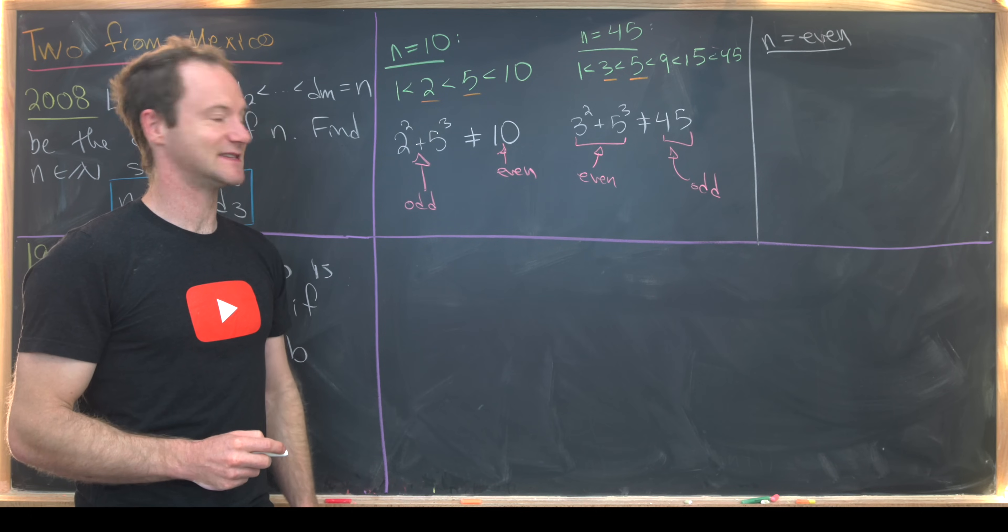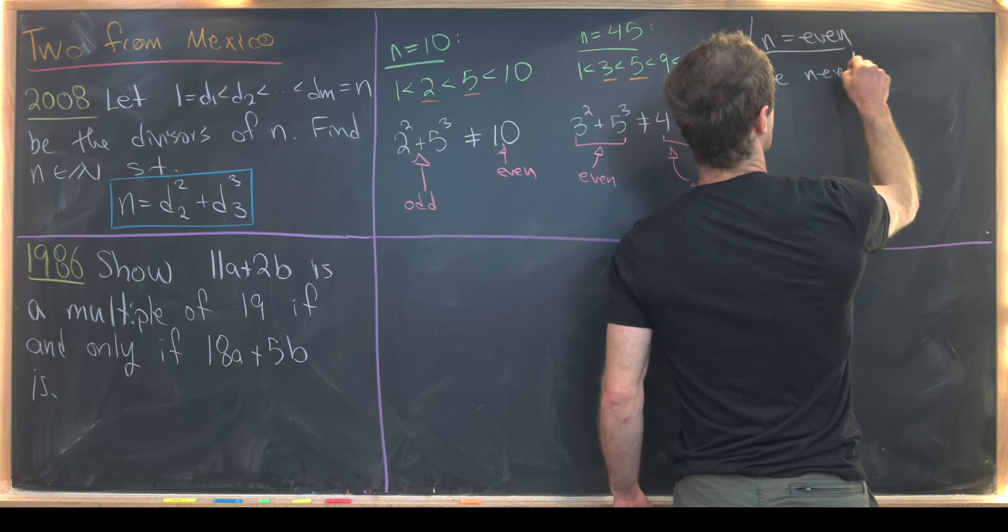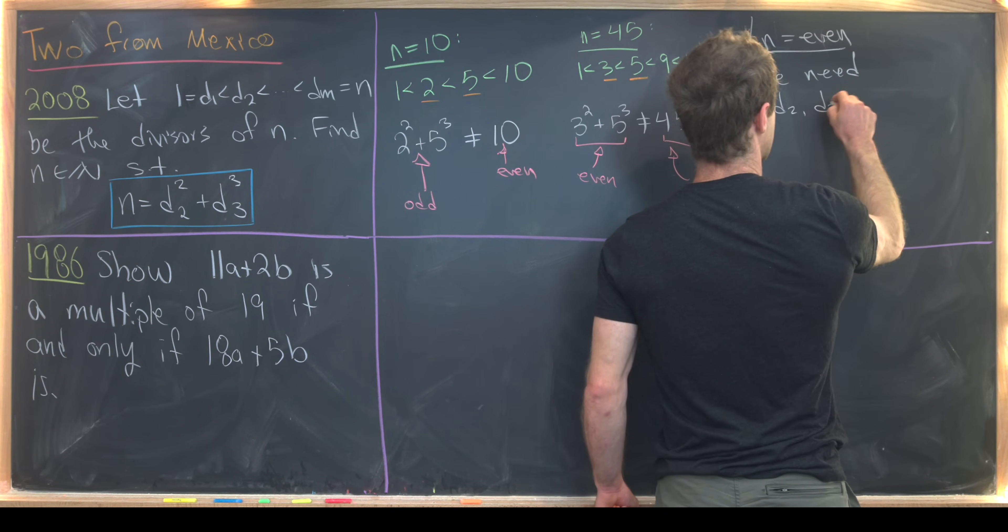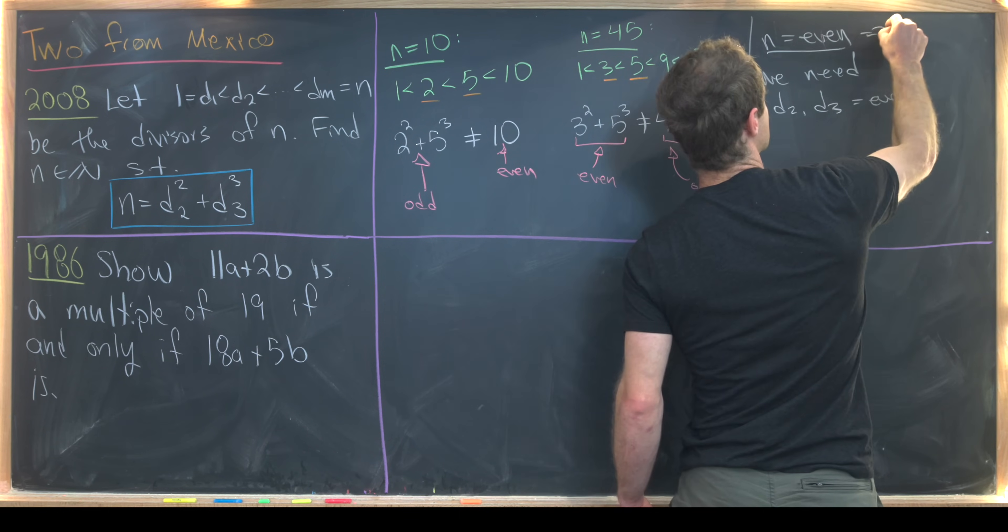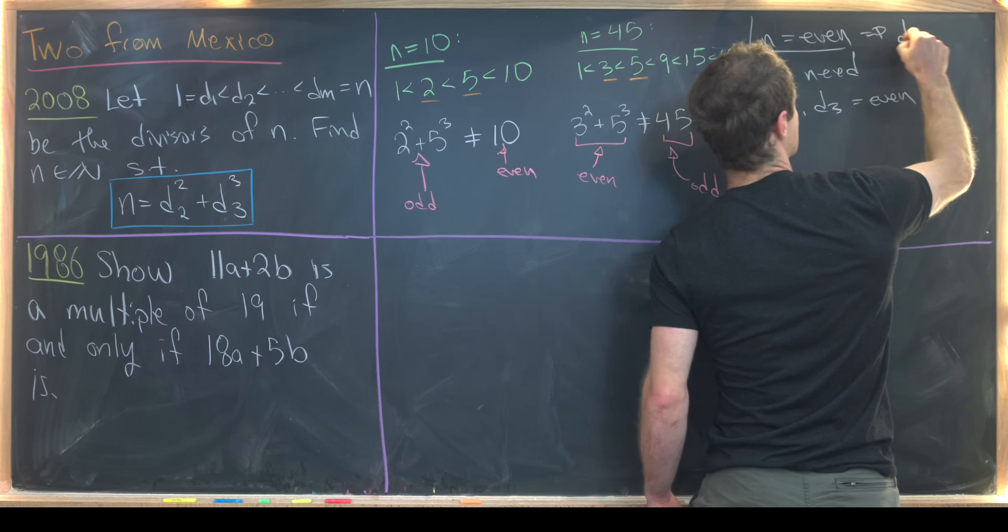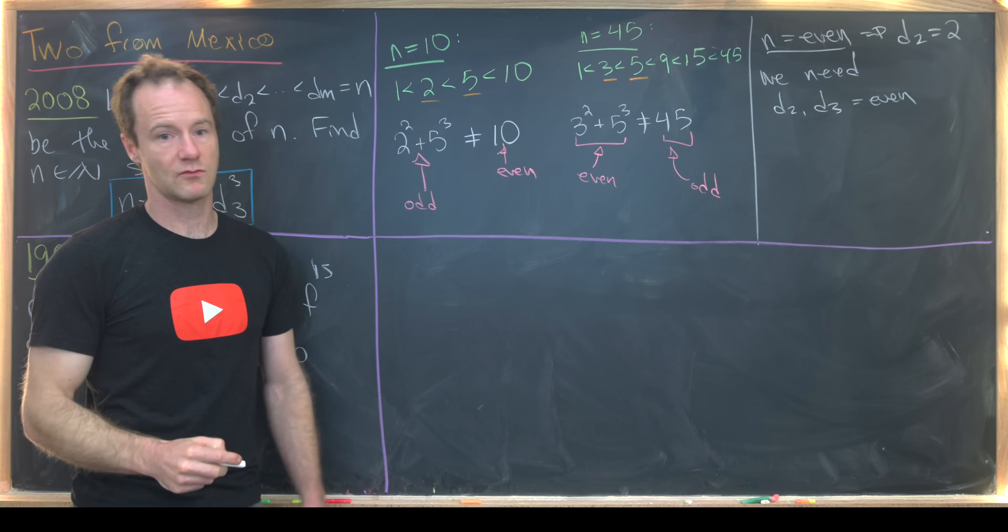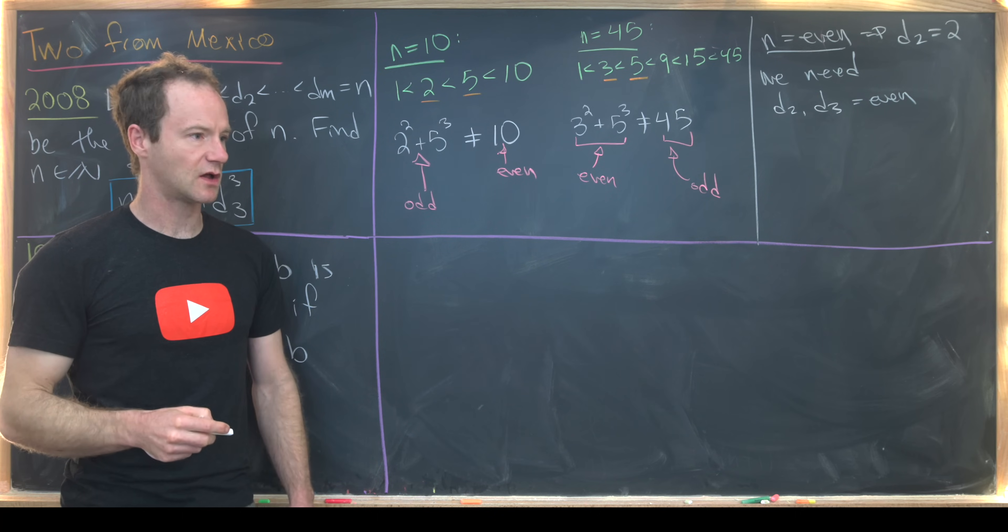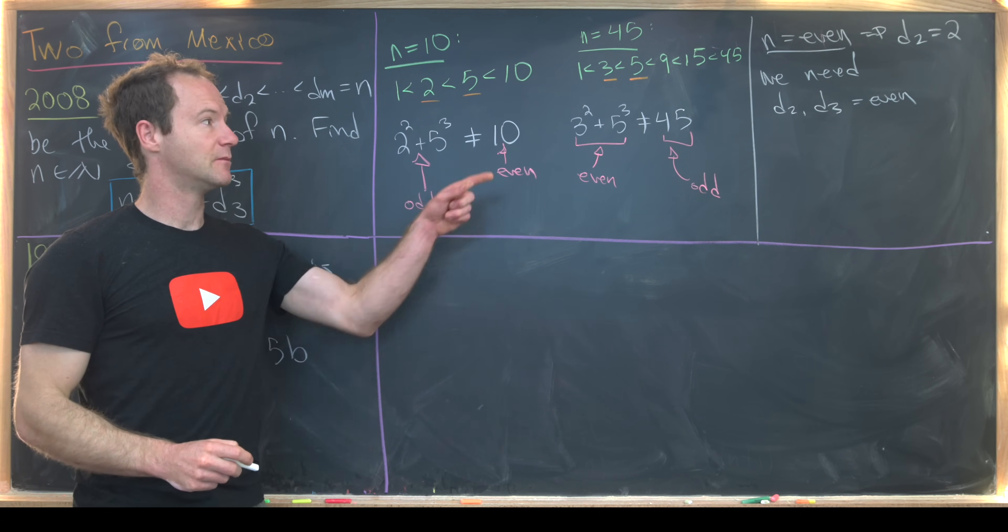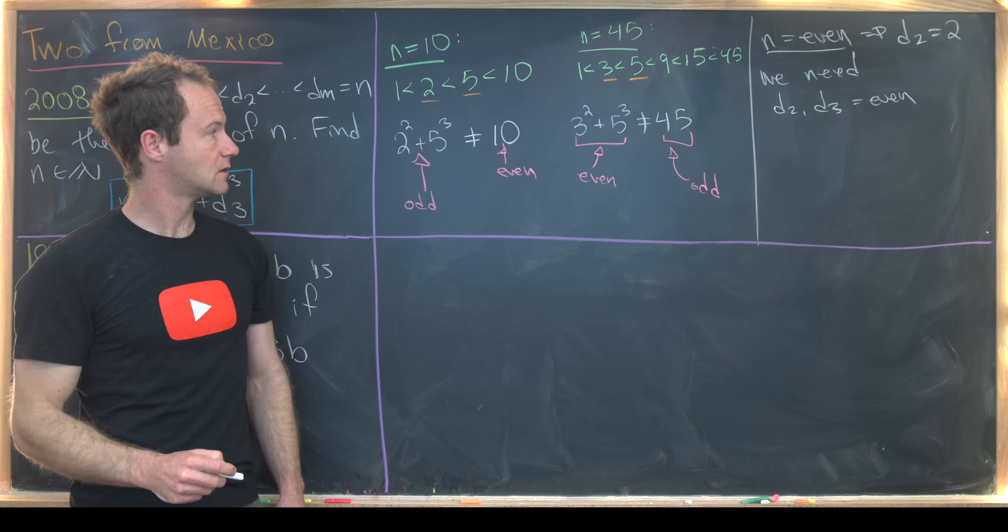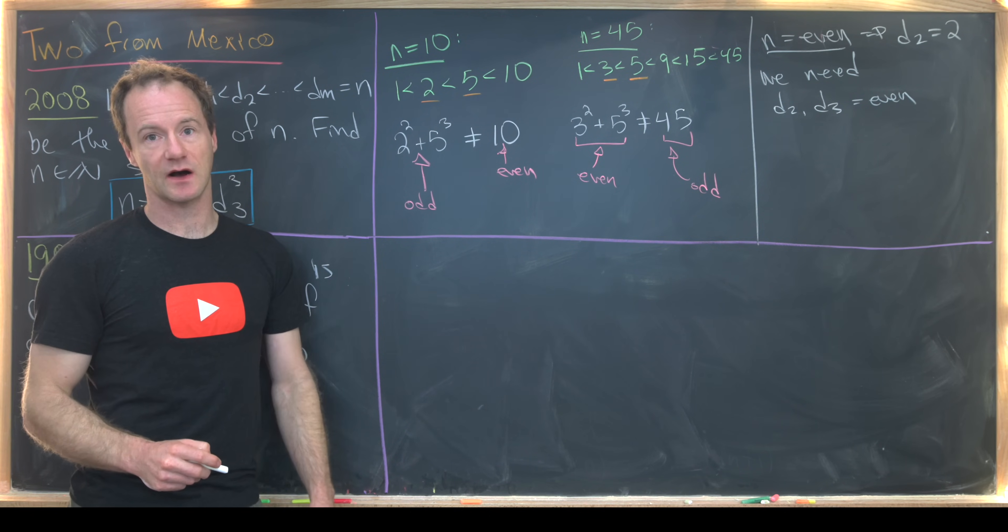So we know that N is even. But then furthermore, we need the following fact. We need D2 and D3 to both be even. Well, obviously, if N is even, then D2 is equal to 2, so it's already even. 2 is going to be the smallest non-1 number that divides any even number. But then we need D3 to be even. Because otherwise, this sum over here would be odd.